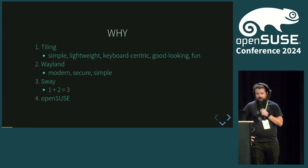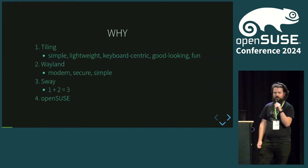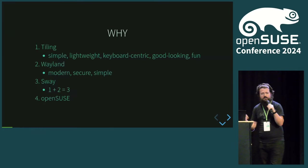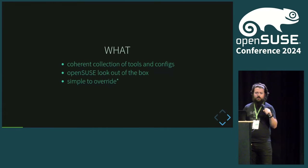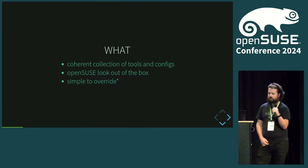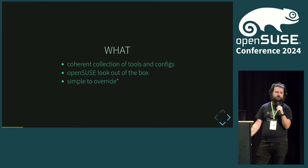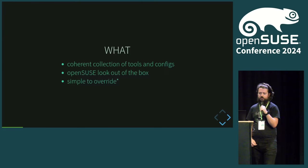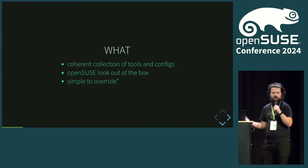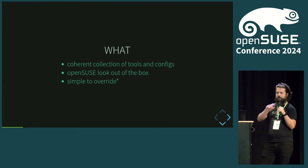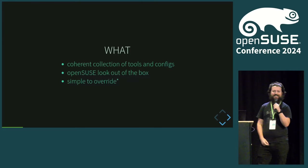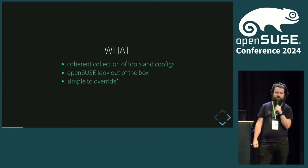If you want to use a tiling window manager on Wayland, you are probably using Sway or looking at Sway — it's the most common one. And obviously we want to do this on OpenSUSE. So, what is OpenSUSE Way? It's a collection of tools and configs for these tools and applications to provide the OpenSUSE look on a Sway install out of the box, to look nice. It's simple to install and simple to override, so you can get about 70% of the way to a nice desktop by installing OpenSUSE Way, and then add your own special configuration on top.